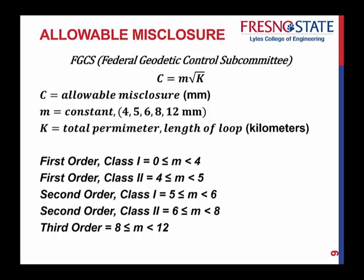Based on what constant M you use, there are certain classes and orders of survey. If you want to be very accurate and precise, you want first order class 1, where the constant is between 0 and 4 millimeters. There's also first order class 2, second order, and so forth down to third order. Third order is not very good. In lab you'll likely be closer to second order class 1 or class 2, which is fine for that kind of work. First order requires very precise leveling with different procedures and equipment.